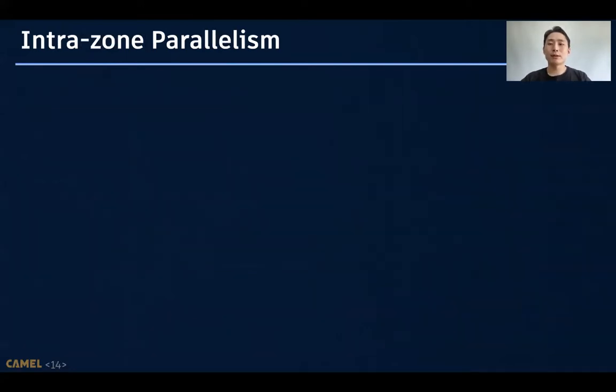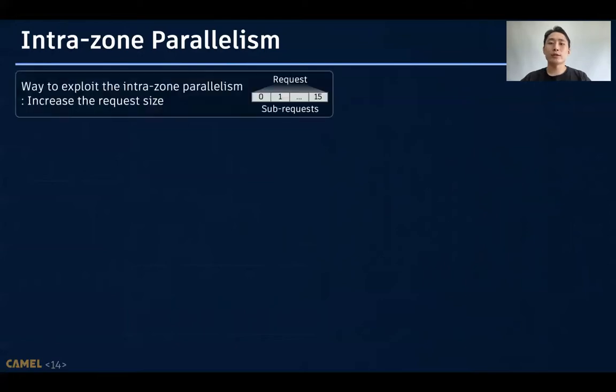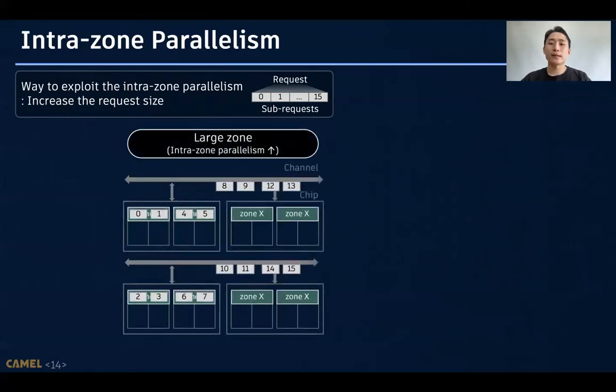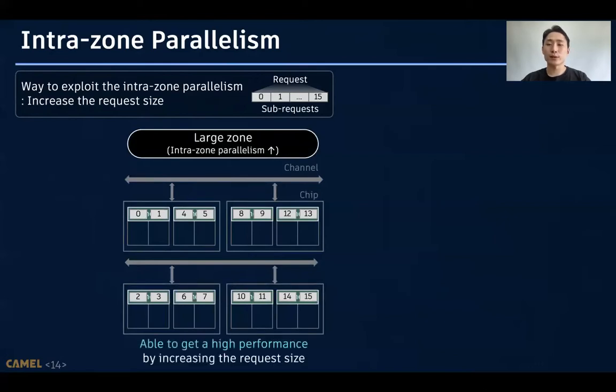Let's check the intra-zone parallelism first. Intra-zone parallelism is a parallelism that can be utilized when accessing a single zone, and you can utilize it by increasing the request size. Then, it will be divided into multiple sub-requests, and in the case of large zone devices, which have a high degree of intra-zone parallelism, the sub-requests can be striped into many different internal resources and served in parallel. So, we can get a high performance by only increasing the request size.